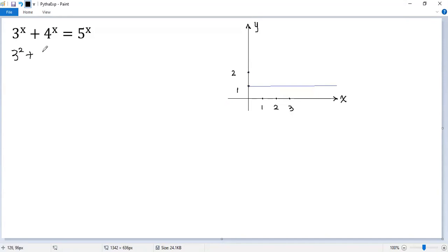3 squared plus 4 squared equals 5 squared. That means x equals 2 is a solution to the given equation.